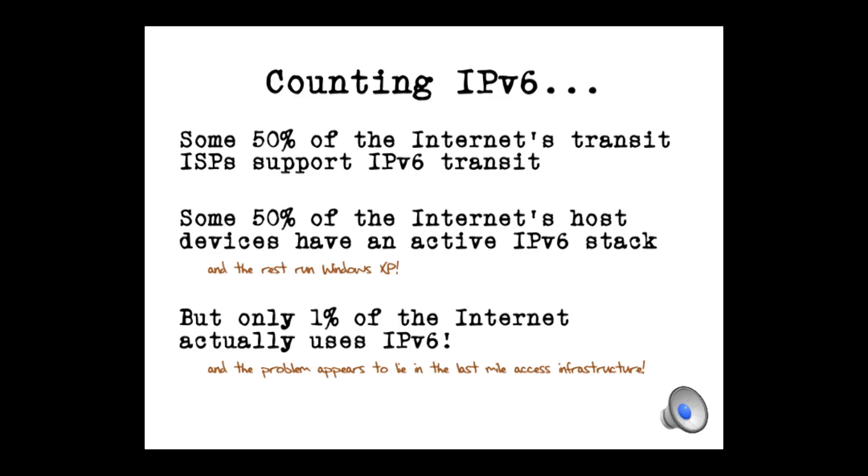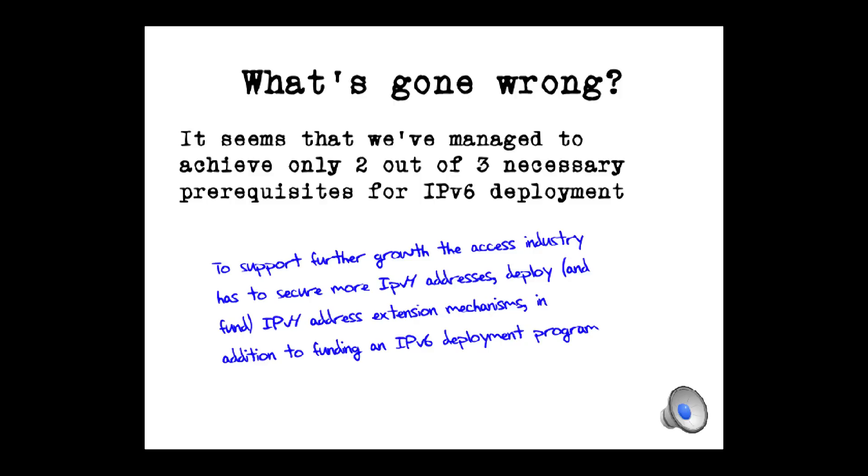So, overall, it seems that when we look at this, phenomenally, you know, half of the internet's long-haul transit ISPs, the thing that gets you around the country and around the world, 50% of them support V6 transit. Brilliant. And, you know, Microsoft and Apple and everyone else have done an enormous amount of work in devices. As far as we can see, at least half of the internet's end devices have an active V6 stack. And the rest? Well, they run Windows XP. But when we combine those, what we actually find is that around 1% of the users, you know, only 1% use V6. So, the problem is in this last mile infrastructure. We've done two out of three, but the access industry is getting very slow.